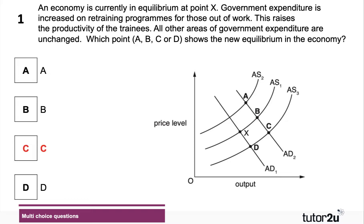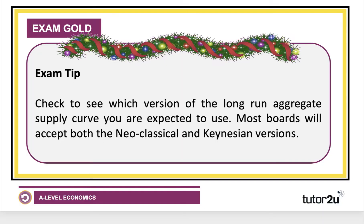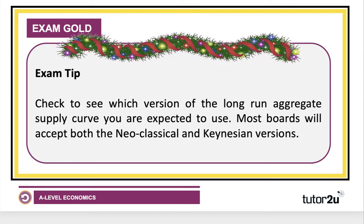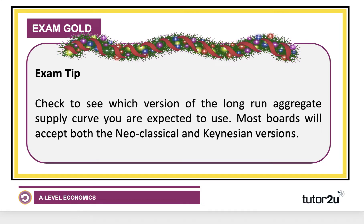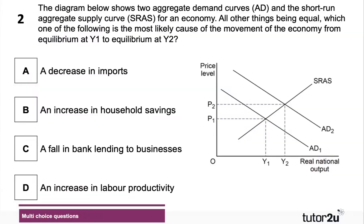The answer is C. Keep in mind that different exam boards use different versions of the long-run aggregate supply curve — the neoclassical version and the Keynesian version. Check which version you're expected to use, but most boards will accept both, so just choose the one you're most comfortable with. Here is question two: the diagram shows two aggregate demand curves and the short-run aggregate supply curve.